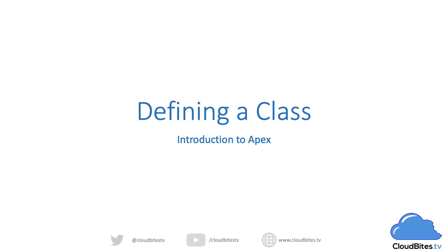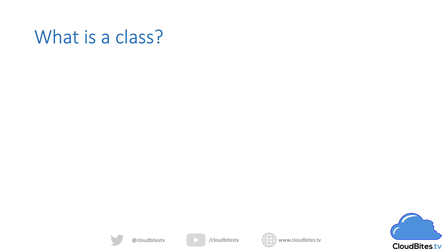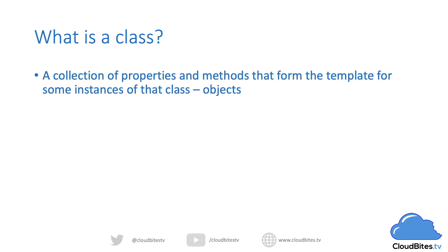So what is a class? A class is a collection of some properties or variables and methods that form the template for instances of that class, and those instances are called objects. When we talk about Apex being an object-oriented programming language, what we mean is that we create objects that are instances of some classes we've defined, and we work with those objects.